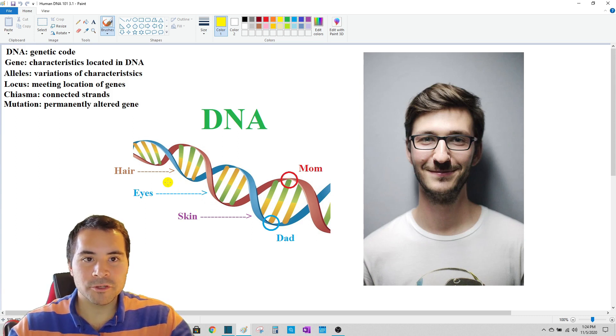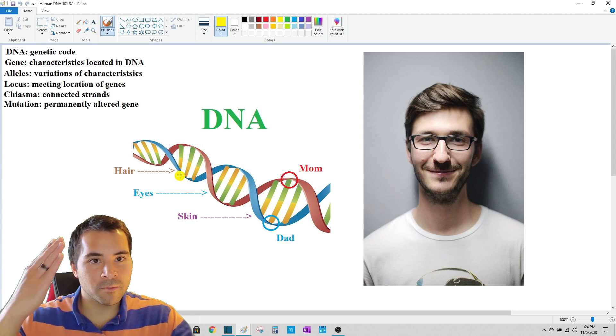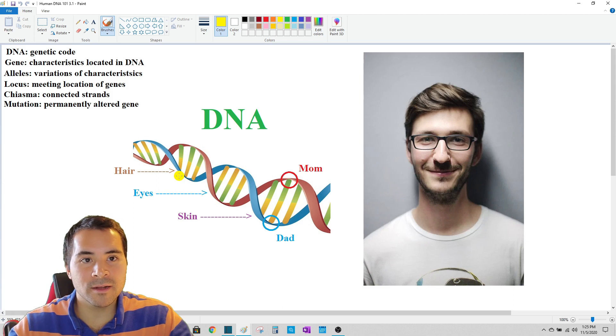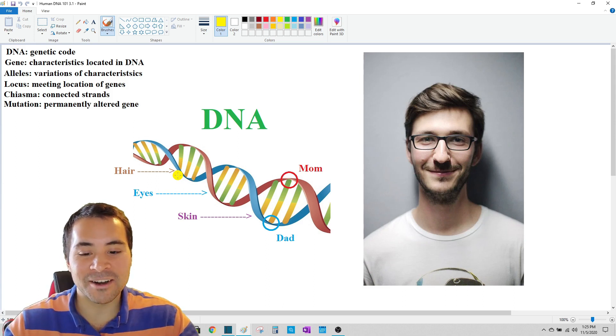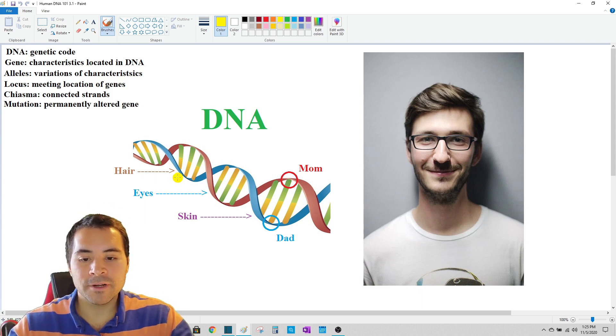Variations of those genes do exist. For example, if hair color is located here, not everybody has the same color hair, right? My hair is black, your hair could be blonde, brown, green. That's not natural. That would be a mutation, but we'll get to that later. Anyway, so there's many different types of hair color out there. Those different types are called alleles. Alleles are variations of genes. So simple.